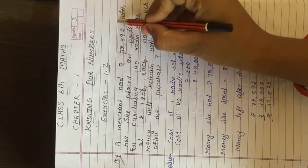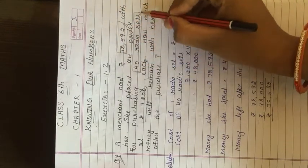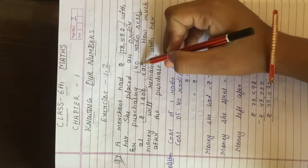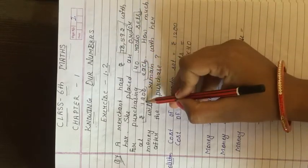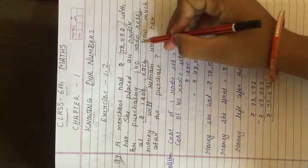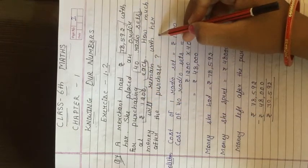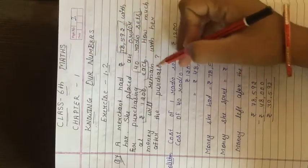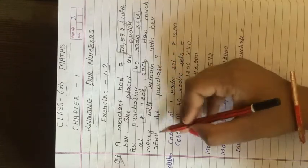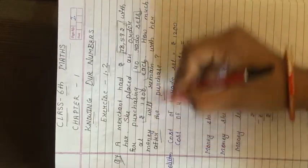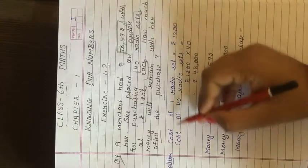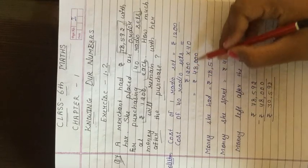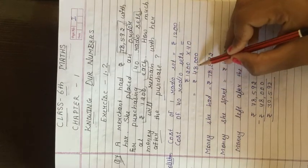Total Rs. 78,592. Now she ordered 40 radio sets. A radio set is Rs. 1200. How much money will be paid for 40 radio sets? We will multiply it with 40. Cost of one radio set is Rs. 1200. Cost of 40 radio sets, we will multiply it with 40. Rs. 48,000.